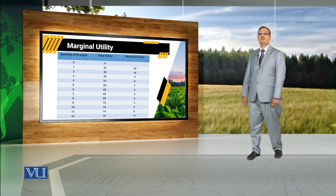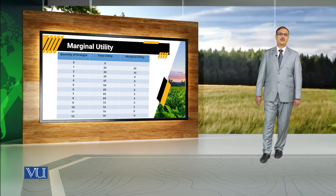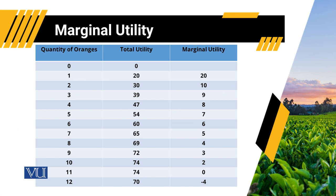Similarly, when the consumer uses an additional unit of orange — that is, two units of oranges — the total utility is equal to 30, while the total utility against the first unit of oranges is equal to 20. So in this case, the marginal utility is equal to 10, which is the addition in total utility because of additional consumption of the commodity.